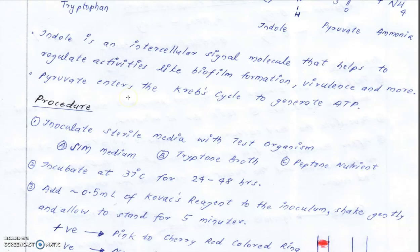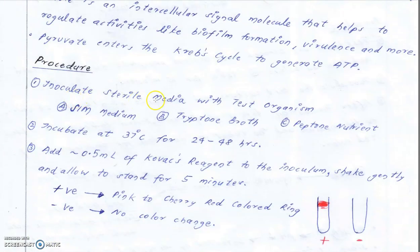Now we move to the procedure. Inoculate sterile media with the test organism. Sterile media is necessary because if any contaminant organism is present, it could give a false positive result. We need to determine whether the test organism is indole positive or not. The main media used are SIM medium, tryptone broth, and peptone nutrient broth.